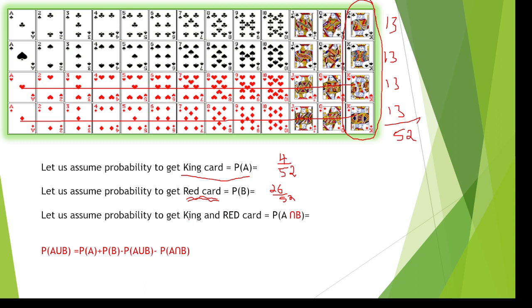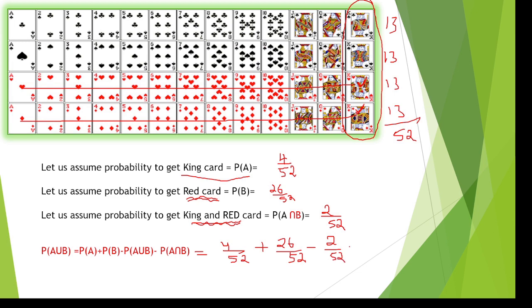The joint probability, A intersection B, means the card must be both a king and red. There are only two red kings out of 52 cards, so the joint probability is 2 by 52. Therefore, probability of A union B equals 4 by 52 plus 26 by 52 minus 2 by 52, which equals 30 minus 2, giving 28 by 52.